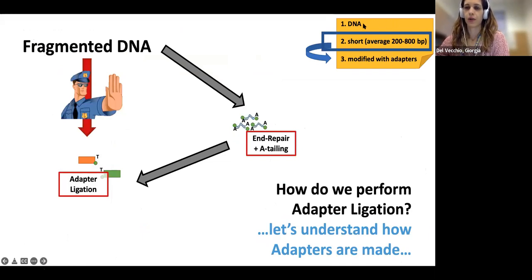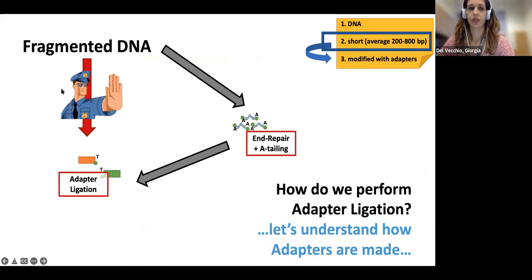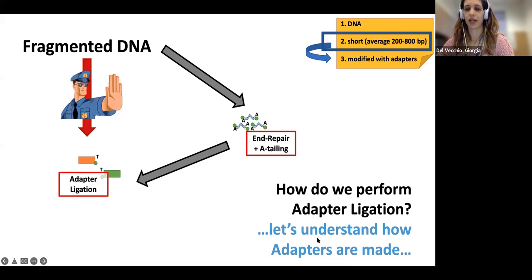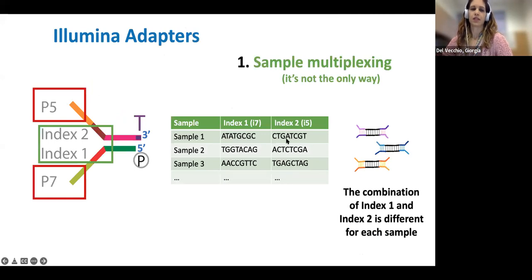Once we obtain short fragments, we need to modify them with adapters. As I mentioned, we can't go directly from fragmentation to adapter ligation — we need end repair and A-tailing. But before discussing that, it's important to look at how the adapters look.